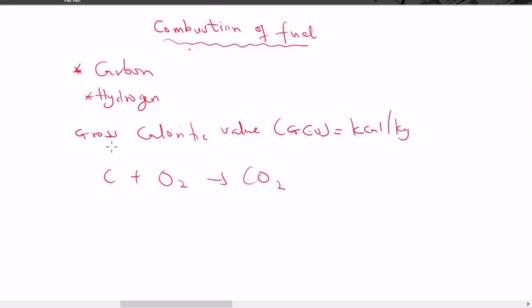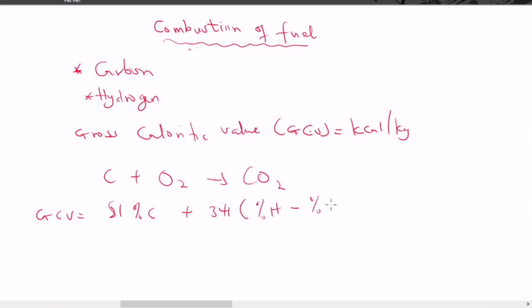There is a formula for finding the gross calorific value. The formula is: GCV = 81 × (%C) + 341 × (%H − %O/8) + 22 × (%S), where %C, %H, %O, and %S represent the percentage of carbon, hydrogen, oxygen, and sulfur respectively.